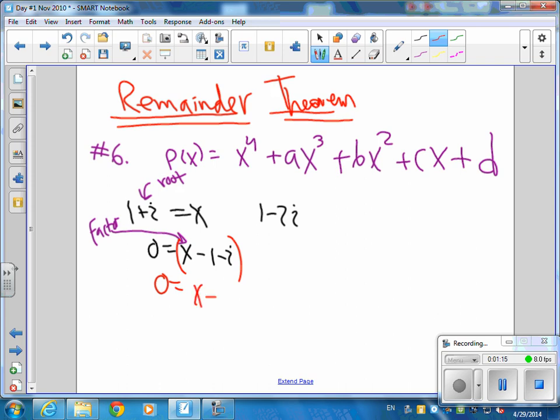The conjugate pair is x minus 1 plus i. And the reason for that is, when you multiply those two together, you're going to get your trinomial that'll have an x and things like that.